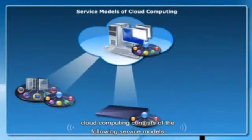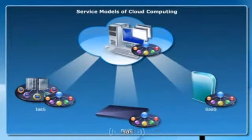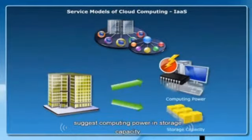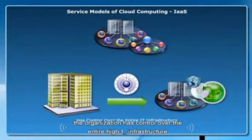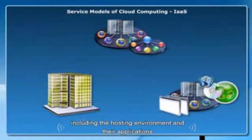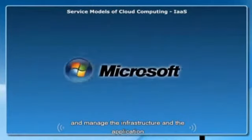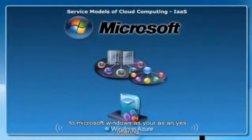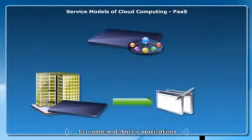Cloud computing consists of the following service models: Infrastructure as a Service (IaaS), Platform as a Service (PaaS), and Software as a Service (SaaS). By using the IaaS model, organizations get infrastructure components such as computing power and storage capacity. The organization has control over the entire IT infrastructure including the hosting environment and their applications. However, the organization needs to allocate additional staff to maintain and manage the infrastructure. Microsoft has proposed remote desktops and virtual machines on Windows Azure as an IaaS offering.